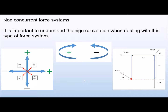Before we start solving our non-concurrent force system, we need to look at the sign convention, because this is really important for this type of problem. For horizontal and vertical forces: a force to the right is positive, to the left is negative, upwards is positive, and downwards on the vertical is negative.